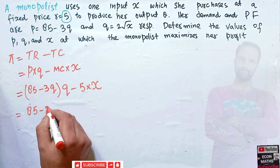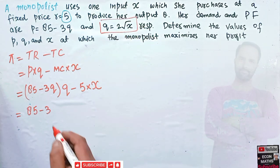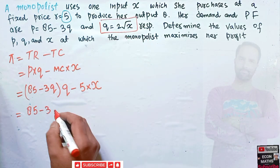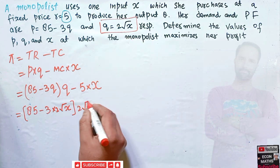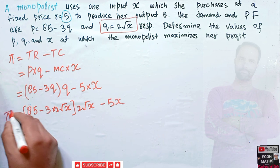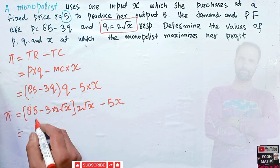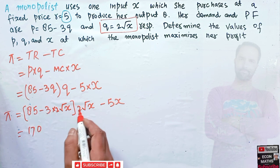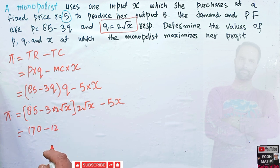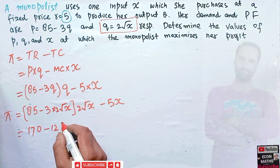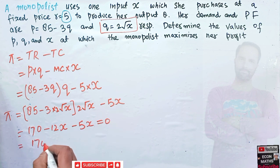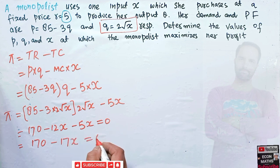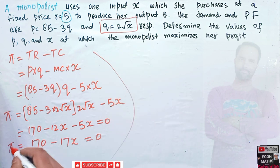Q is given by 2 under root X. So substituting Q equals 2 under root X throughout, the profit function becomes: 85 times 2 under root X minus 3 times (2 under root X) squared minus 5X. Simplifying: 2 times 85 is 170, and 3 times 4 is 12, so we get 170 under root X minus 12X minus 5X, which equals 170 under root X minus 17X.